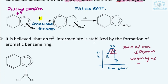The rate of the reaction is dependent on the stability of the transition state, or more appropriately, the stability of the intermediate. The more stable the intermediate, the faster the reaction and the more stable the product.